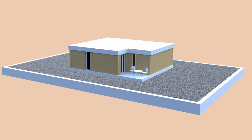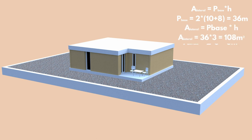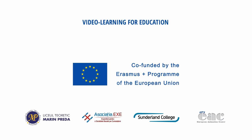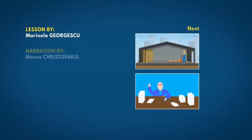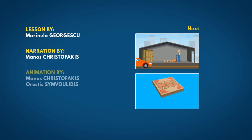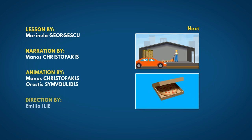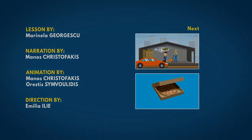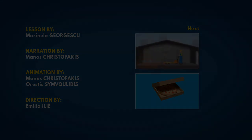The lateral area of the house will be equal to the lateral area of the cuboid with base dimensions of 10 × 8 meters and a height of 3 meters. Calculate the lateral area of the house accordingly.